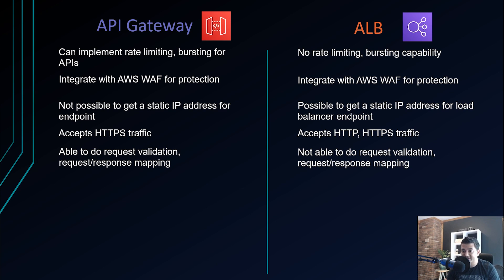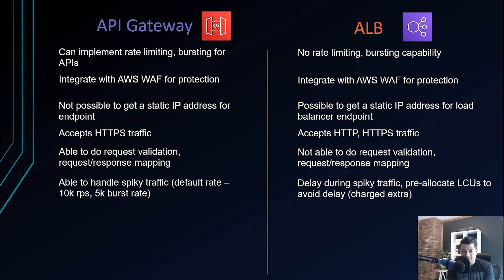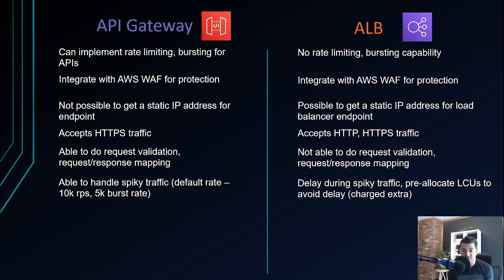Regarding spiky traffic: both can auto-scale, but API Gateway is faster to respond when traffic spikes very quickly, due to the nature of its underlying infrastructure. The default rate is 10,000 requests per second and it can immediately allocate up to 5,000 burst rate. For ALB, if traffic is very spiky there could be a slight delay, however you can pre-allocate LCUs — capacity units for LB — to pre-warm the underlying EC2 infrastructure, though you pay extra for this.